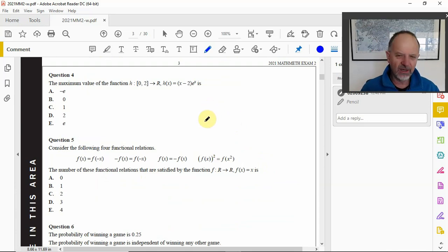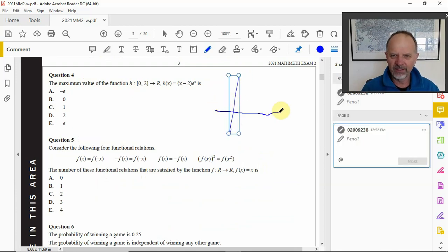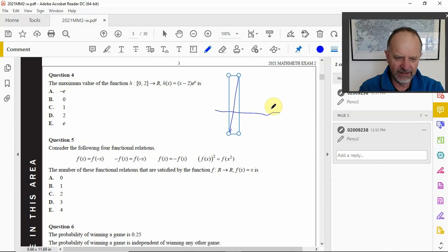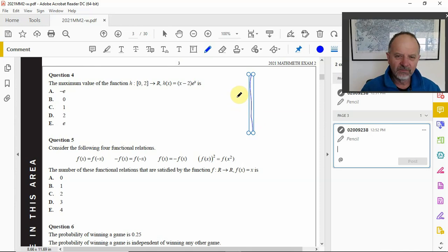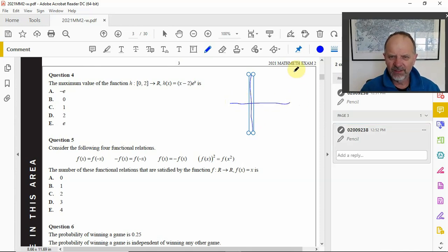Question four: maximum value of the function. With this I would be saying grab your calculator out and draw the graph, because it's asking the maximum value of the function between 0 and 2. When you draw the graph of the function, which I have done previously in the interests of these videos not going too long, I'm not going to do that.